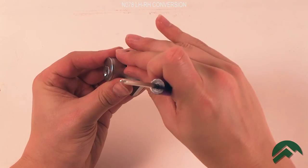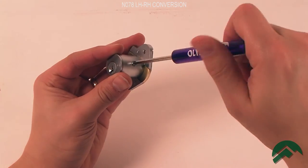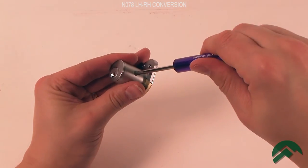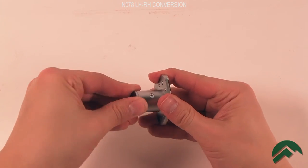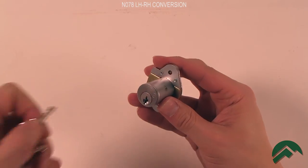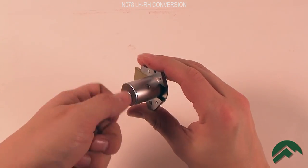Retighten the set screw and check that the barrel does not rotate and the lock operates correctly. If not, repeat the previous steps.